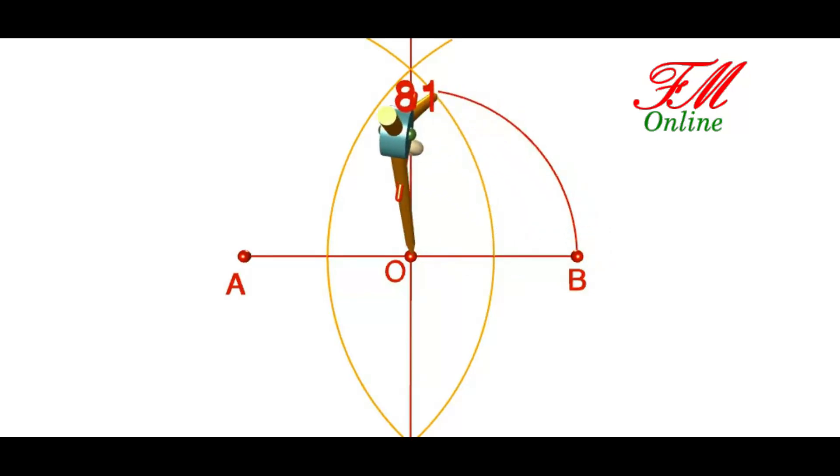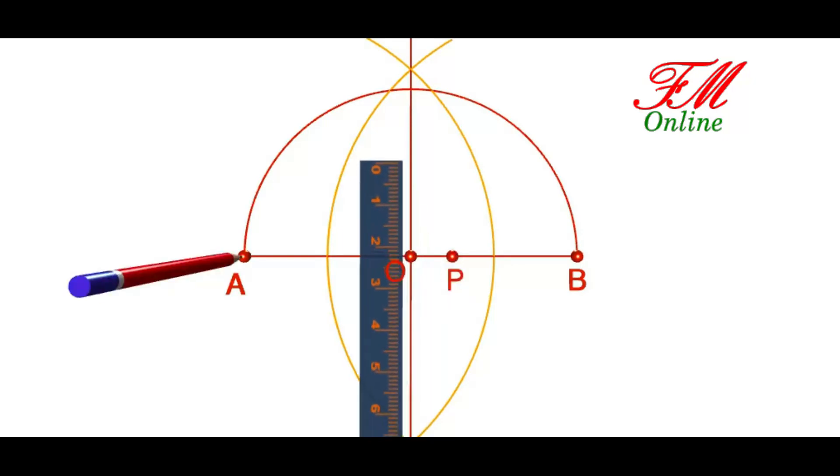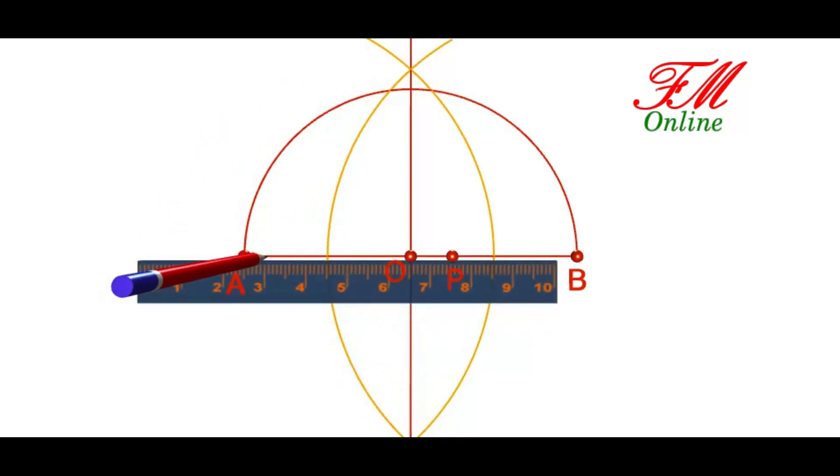Draw a semicircle with O as the center. Mark P on AB such that AP equals 5 centimeters and PB equals 3 centimeters.